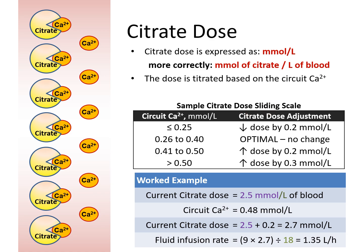Let's use this example: if we started off with a citrate dose of 2.5 millimoles per liter of blood, and the measured circuit calcium is 0.48 millimoles per liter. This would fall at this current range, and we should increase the dose of citrate by 0.2 millimoles per liter, making the current citrate dose 2.7 millimoles per liter.